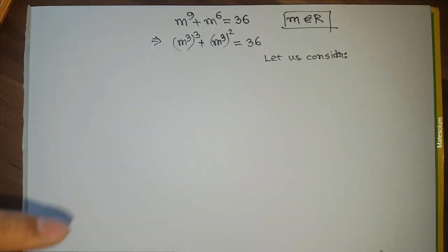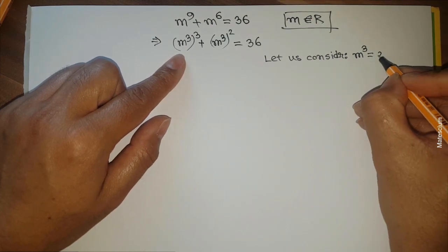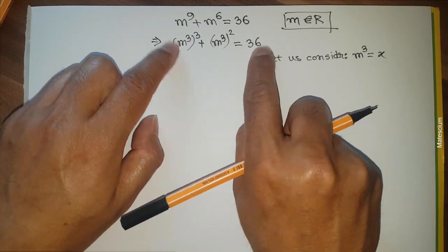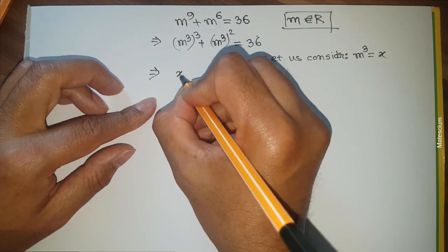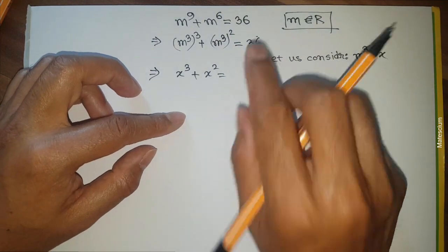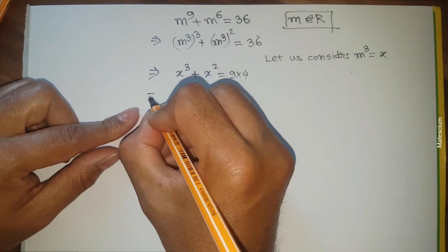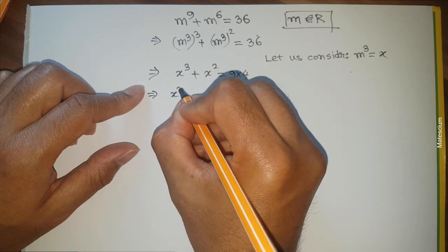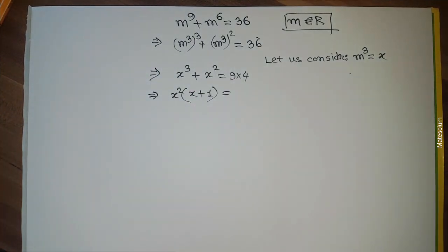Let me consider a simplified parameter: let x equal m³. This substitution simplifies the equation. Replacing m³ with x, the equation becomes x³ plus x² equals 36. I can take x² as a common factor from the left side, giving x²(x + 1) = 36.